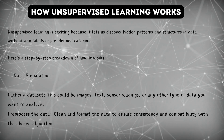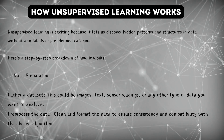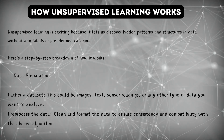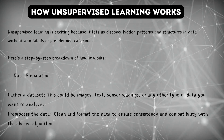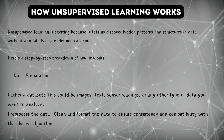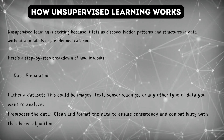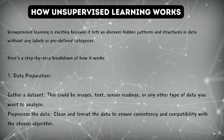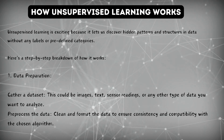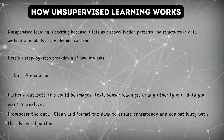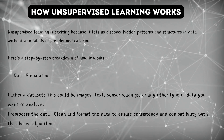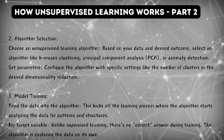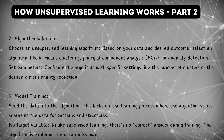Here's a step-by-step breakdown of how unsupervised learning works. Number one, data preparation: gather the dataset and pre-process the data. This could be images, text, sensor readings, or any other type of data you want to analyze. Clean and format the data to ensure consistency and compatibility with the chosen algorithm.